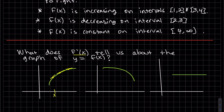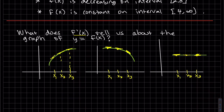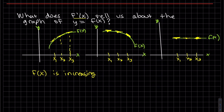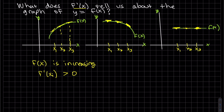In this first graph, we can see f of x is increasing. Since the graph is increasing, what can we say about our derivatives? It looks like the slope at the first point is positive since it's increasing. This slope is positive, and this slope is positive also. So at all these points, the slope is greater than zero — the slope at every point is positive.